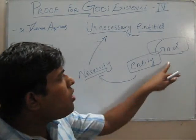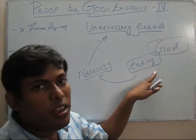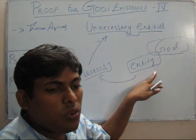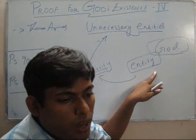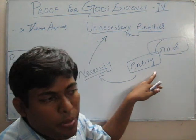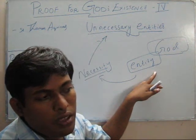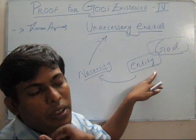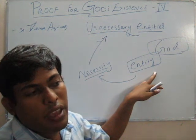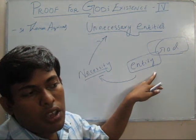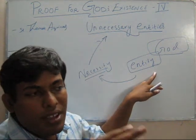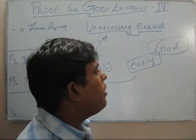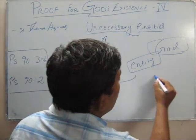That entity which has always existed and does not derive its necessity from anything else is what we call God. God is the entity who doesn't derive his existence from anything else — he is always necessary. He doesn't become unnecessary; he doesn't expire.